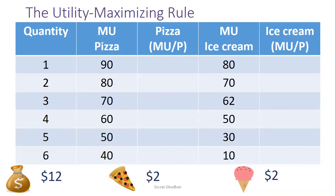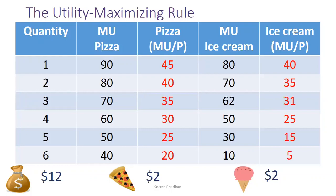We have the case where we're having a budget or an income of $12, and we have to make a choice between slices of pizza and ice cream. The price of pizza is $2, and for ice cream it's also $2. In order to know how we can maximize our utility, we have to use the marginal utility per dollar spent. For the first slice of pizza, the marginal utility is 90, and the marginal utility per dollar is 90 divided by $2, so it's 45. For the first ice cream, it's 80 divided by $2, so it's 40.